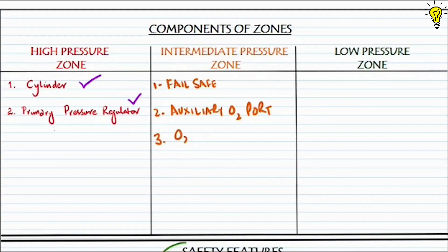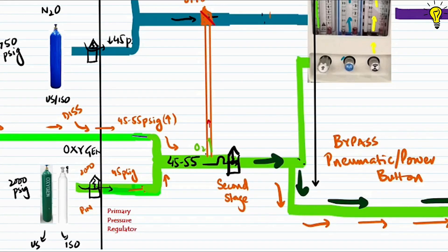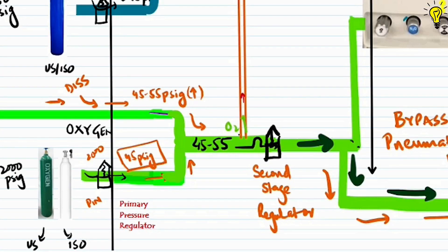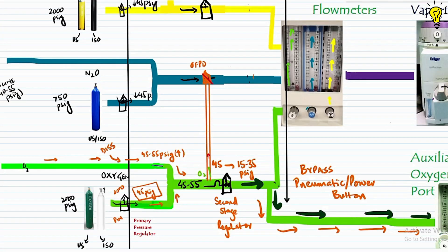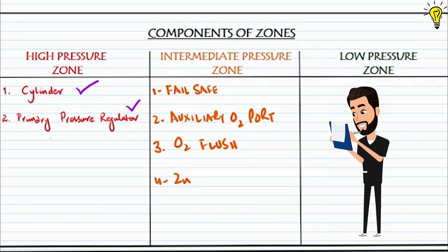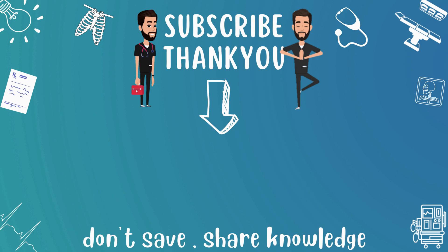The final component is the second stage regulator. The primary pressure regulator reduces cylinder pressures from 2000 psig to 45 psig. Newer machines also have secondary pressure regulators placed in the intermediate zone that further reduce this pressure to 15–35 psig before the low pressure system starts. This helps supply a constant lower pressure to the flow meters, acting as a buffer against fluctuations in pipeline or cylinder pressures. So adding the secondary pressure regulator as the fourth component of the intermediate zone.